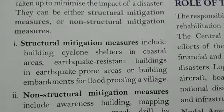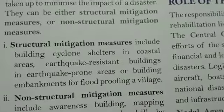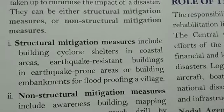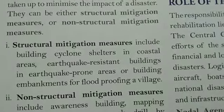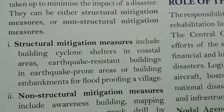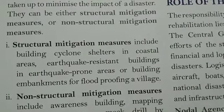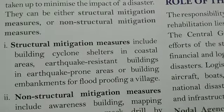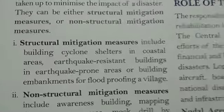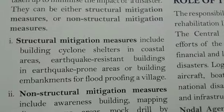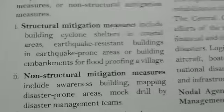Structural mitigation also includes earthquake-resistant buildings in earthquake-prone areas, and building embankments for flood proofing in flood-prone areas. So the three structural mitigation measures are: building cyclone shelters in coastal areas, earthquake-resistant buildings in earthquake-prone areas, and building embankments in flood-prone areas.